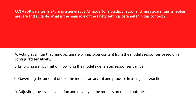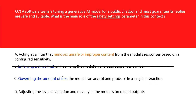Now let's look at this question about safety settings. Option A says it acts as a filter that removes unsafe or improper content from the model's responses based on configured sensitivity. The core purpose of safety settings is to act as a content filter screening model outputs against predefined categories of harm — let's keep it. Option B says enforcing a strict limit on how long the model's generated responses can be — this relates to output length, not content safety. Option C says governing the amount of text the model can accept and produce in a single interaction — this describes the model's context window or working memory, not content safety.